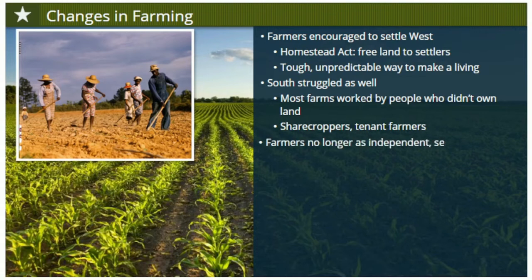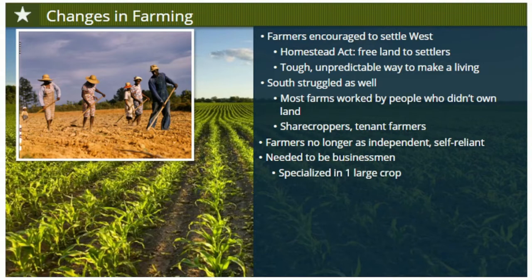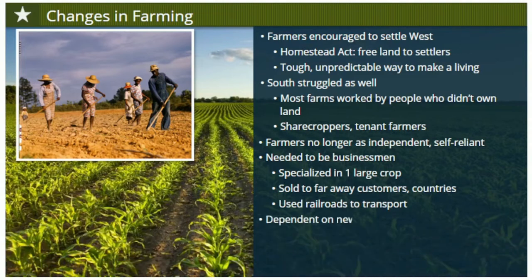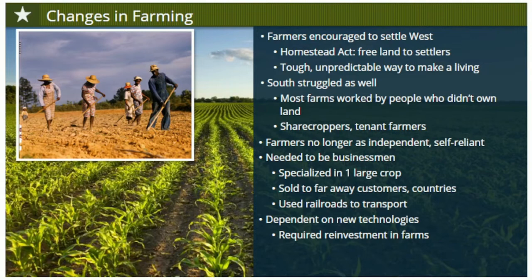Agriculture had changed. Gone were the days when farmers could be totally independent and self-reliant, producing for themselves and their local communities. Instead, farmers increasingly needed to be businessmen, specializing in one large crop like wheat or cotton, and growing as much of it as possible. Most of the crop would be sold to faraway customers or even other countries, using railroads to transport goods long distances. Agriculture was now more dependent on new technologies, and farmers were increasingly linked to national and even international economies, subject to economic forces beyond their easy understanding.